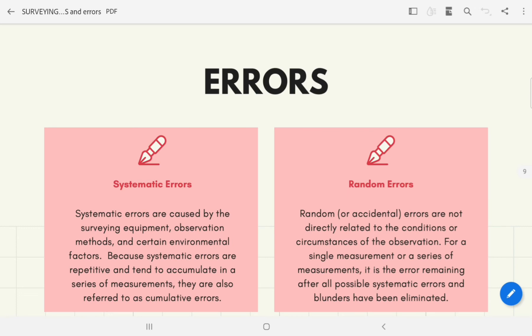Systematic errors are caused by the surveying equipment, methods, observations, and certain environmental factors. Under the same measurement conditions, these errors will have the same magnitude and direction. Because systematic errors are repetitive and tend to accumulate in a series of measurements, they are also referred to as cumulative errors.